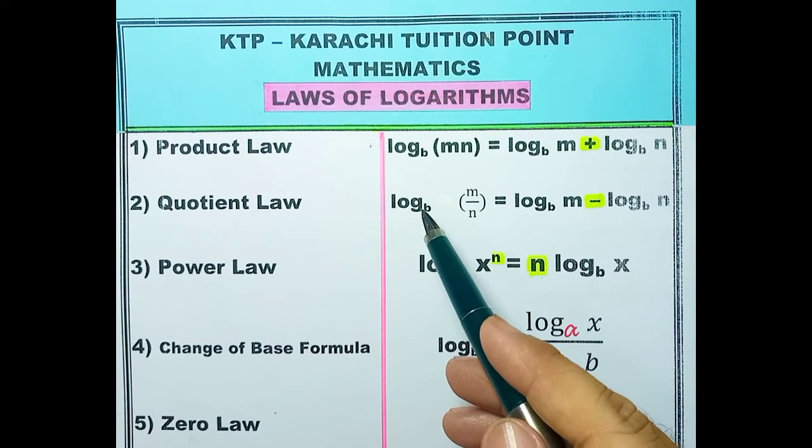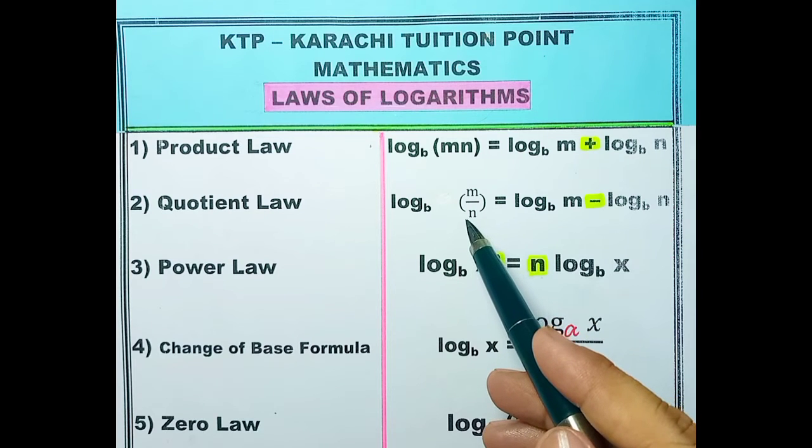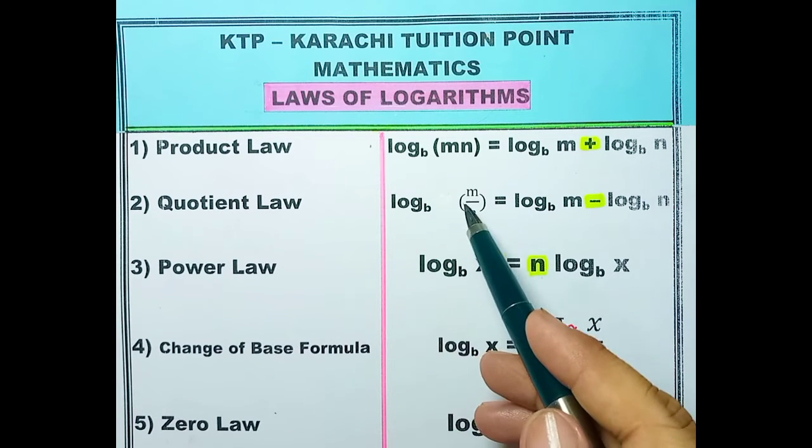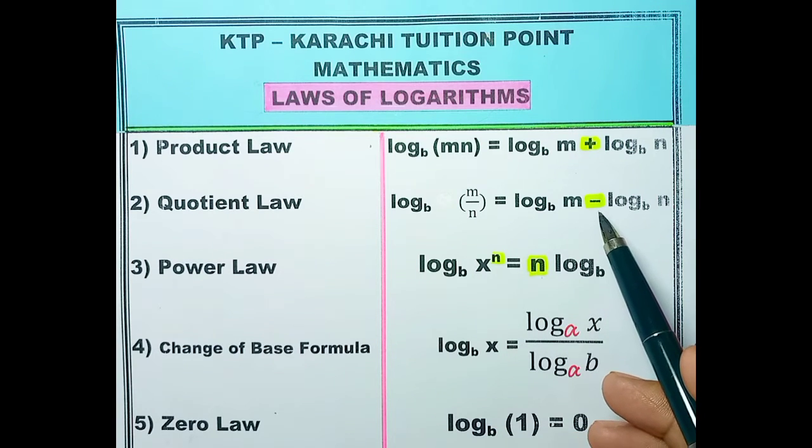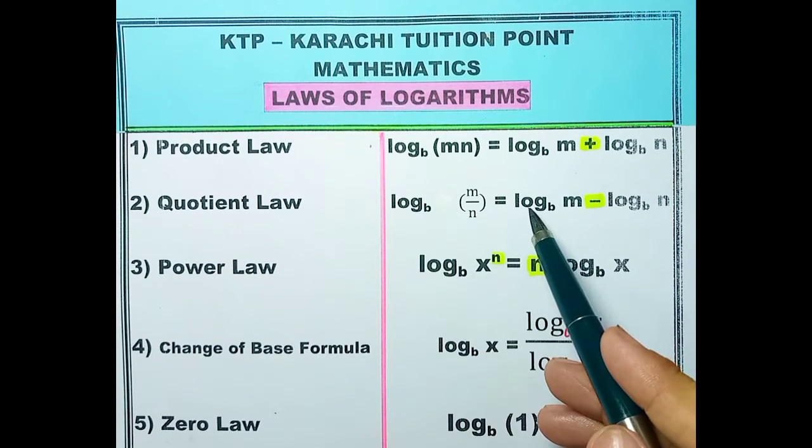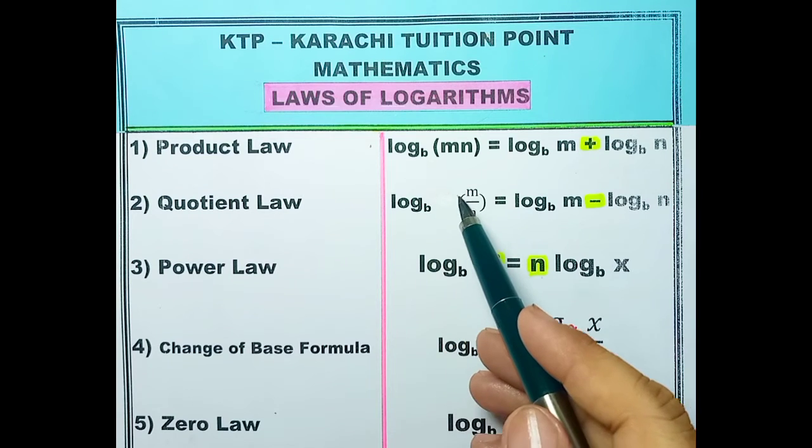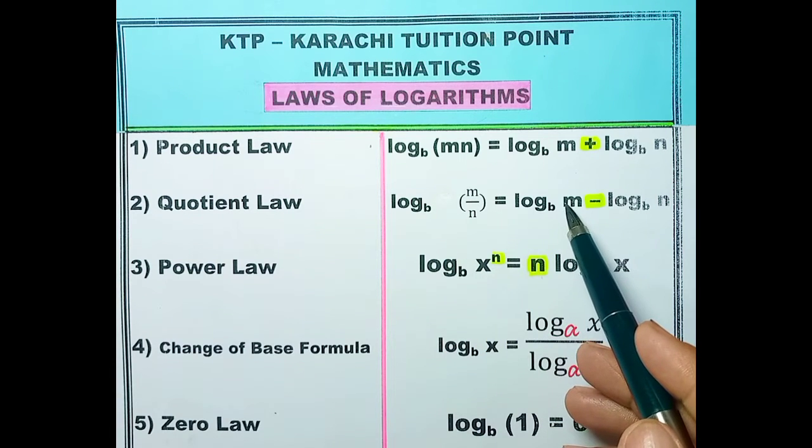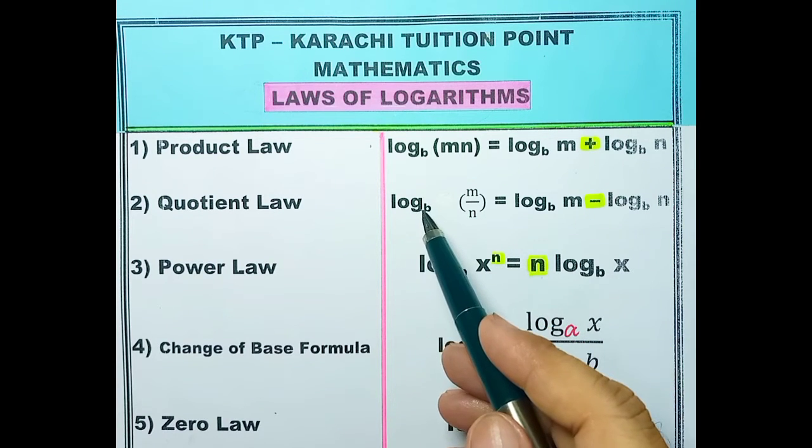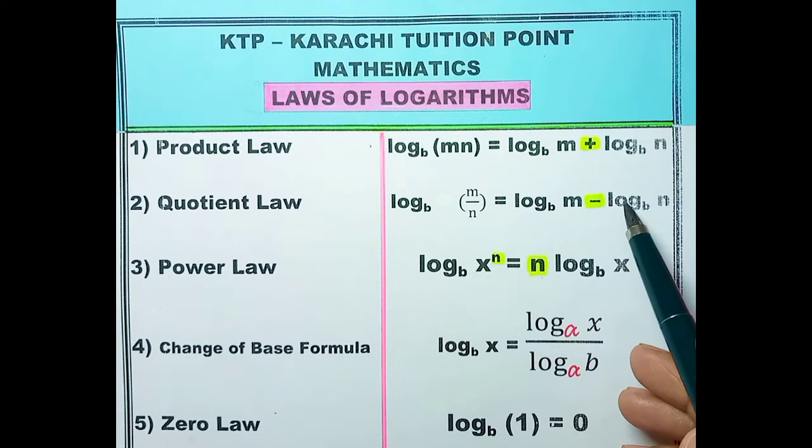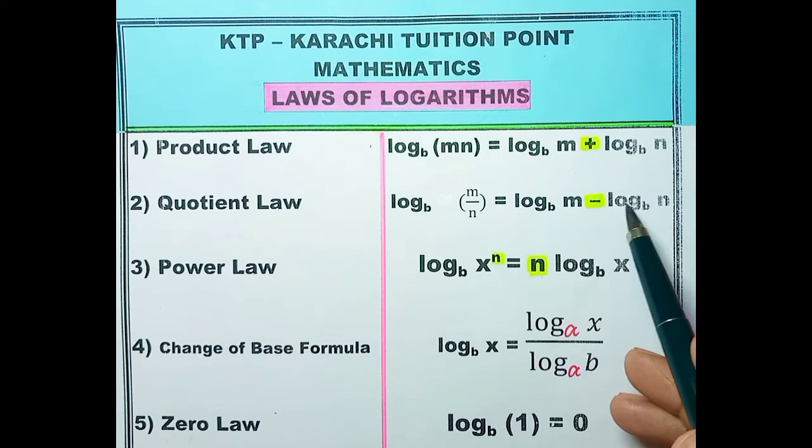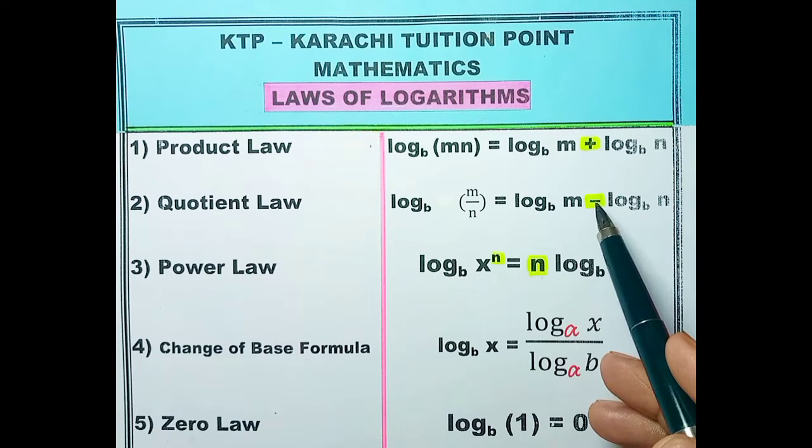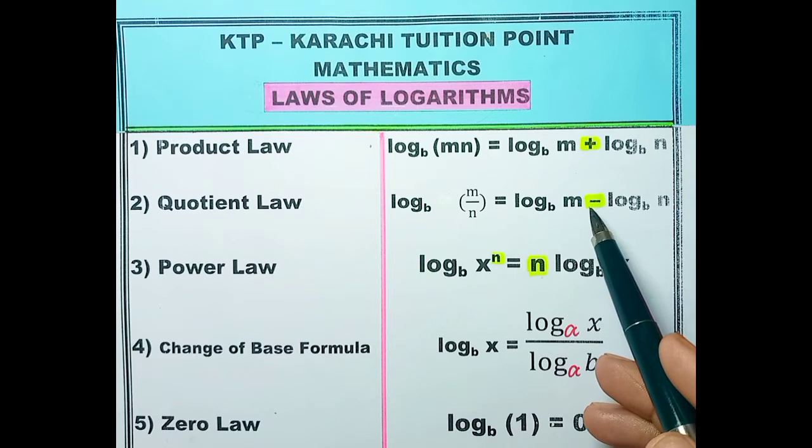Here you can see m is being divided by n. Remember, in log when there is division, we go towards subtraction. You can see log base b to m minus log base b to n. This is numerator so the numerator comes first, then you have to put the minus sign.